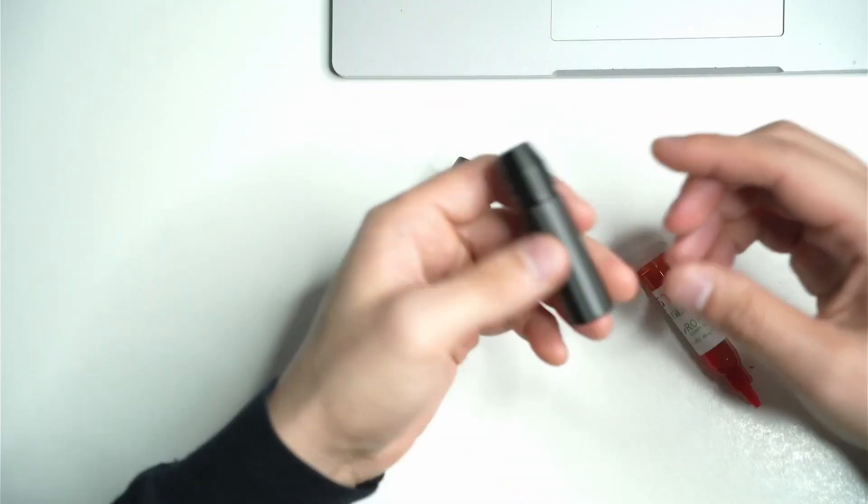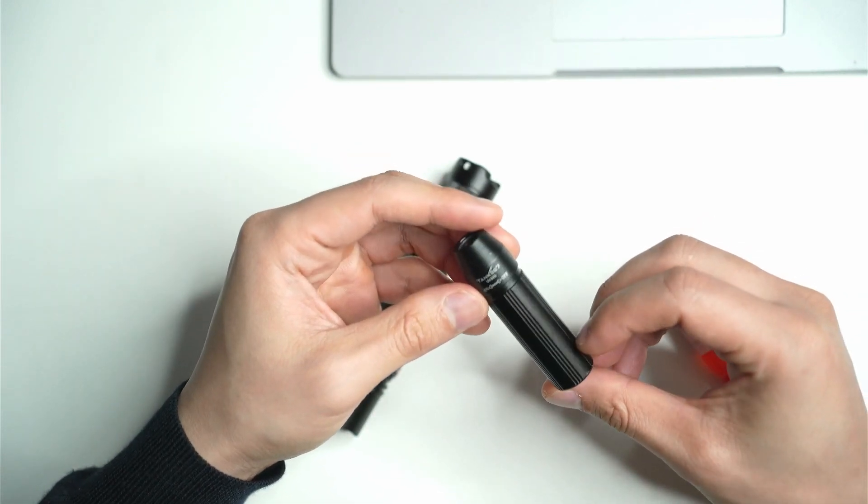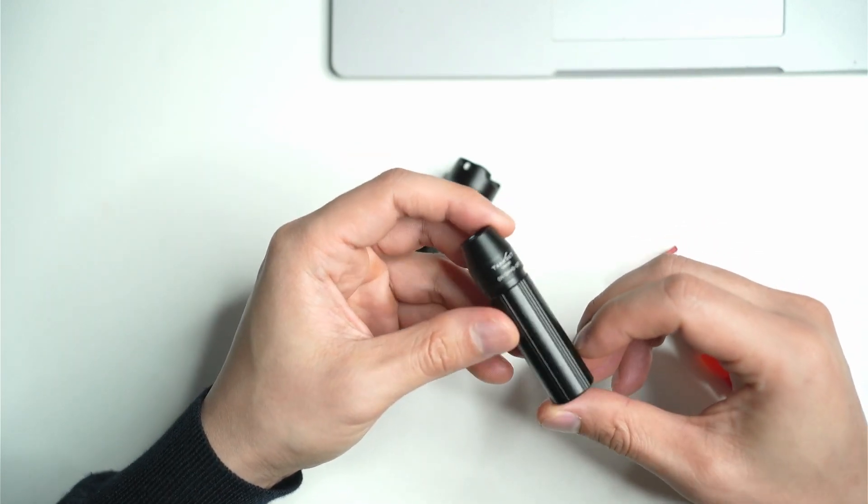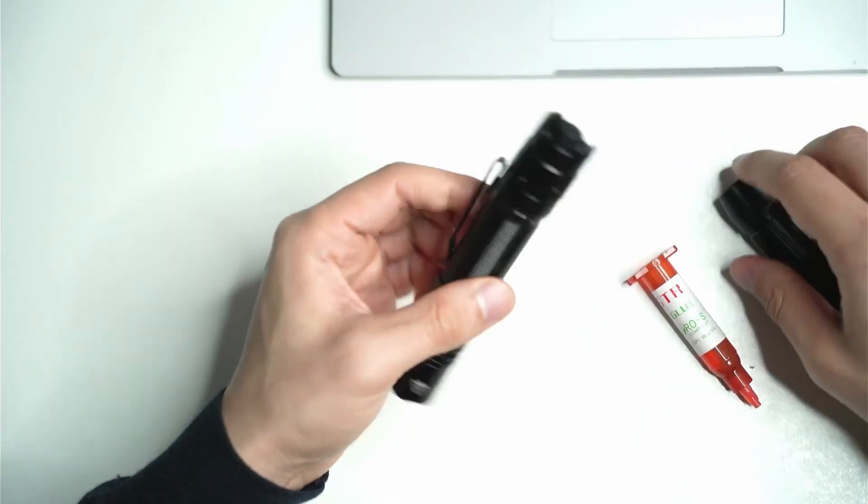And I have one of these torches from a while back. It's a Tank 007 UV 365 nanometers, I believe it is.